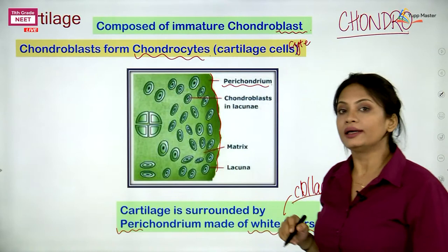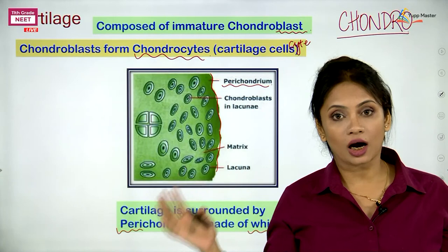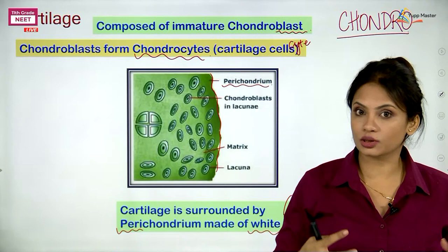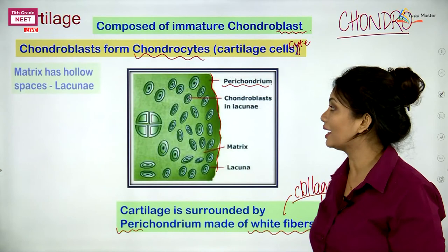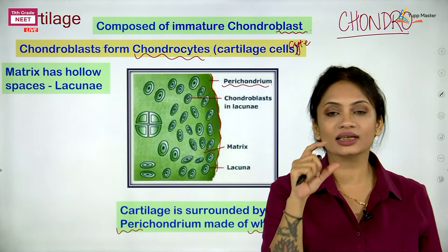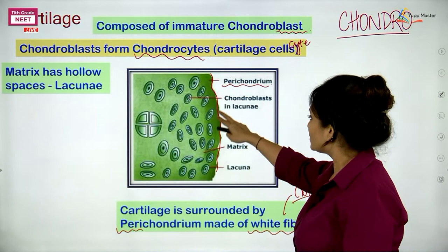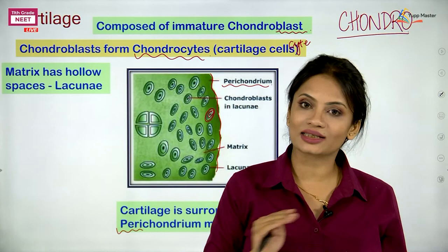Chondrocytes are located inside the cartilage in small spaces. Small spaces are called lacunae. The matrix — all that green part you see — has these small spaces called lacunae, and lacunae is the space in which the cartilage cells are found. Each lacuna has around 2 to 8 chondrocytes, and all those chondrocytes are ultimately half-moon shaped cells.